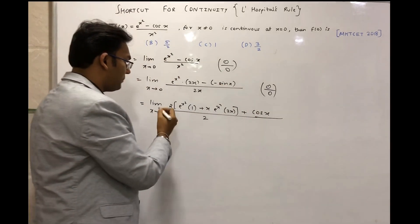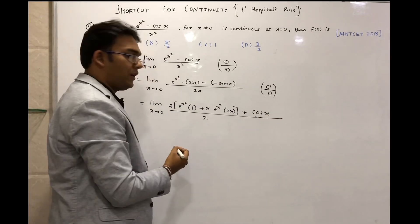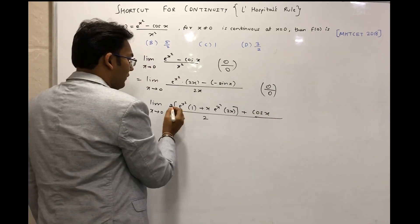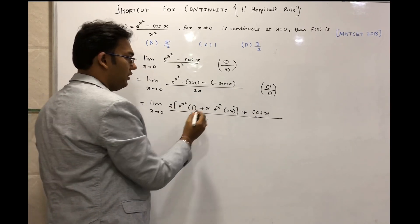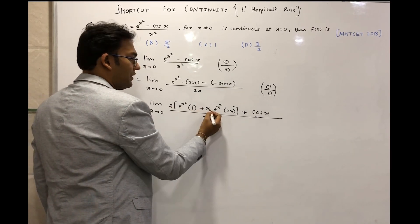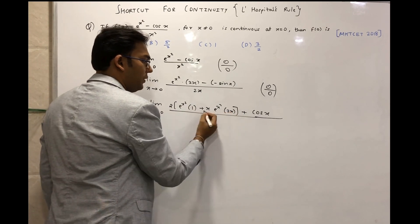So let us try to substitute 0 again and check what is the answer now. So when we substitute 0 here, e^0 will be 1 and the value of x if we substitute here 0 it will be 0.